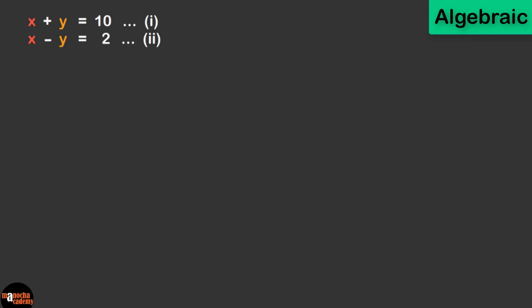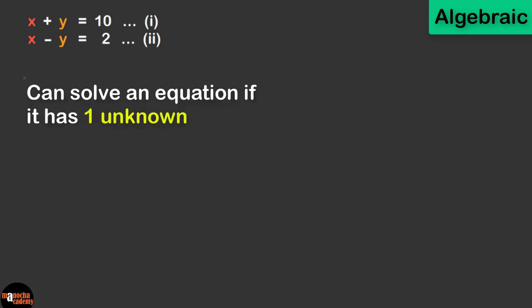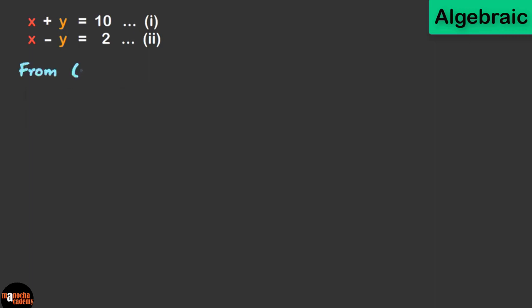Here are the two equations. If you consider the first equation, it has two unknowns, two variables x and y. We can solve an equation if it has one unknown. So we are going to convert the first equation into one variable with the help of the second equation. From equation 2, we get x equal to 2 plus y.